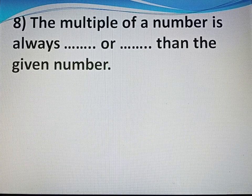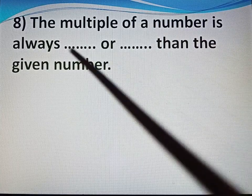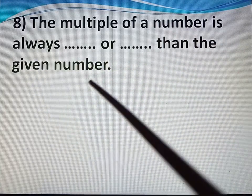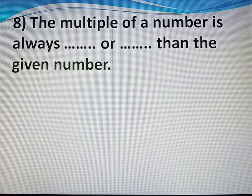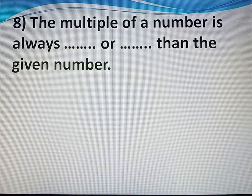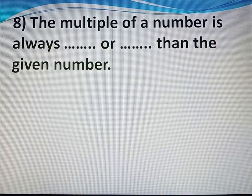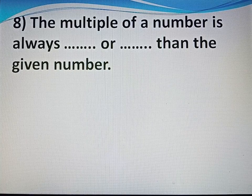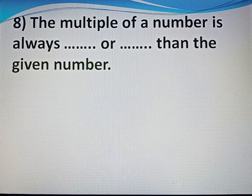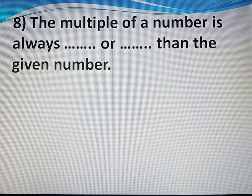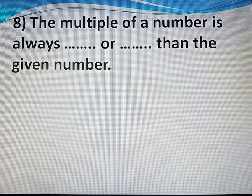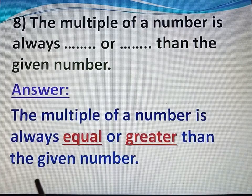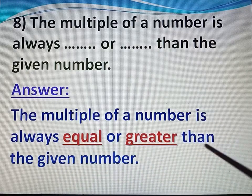Now come to question number 8. The multiple of a number is always dash or dash than the given number. The multiple of a number is always equal to or greater than the given number. For example, multiples of 2 are 2, 4, 6, 8, 10 and so on — the first multiple is 2, which is equal to the number itself, and the rest are greater. So the answer is: equal or greater than the given number.